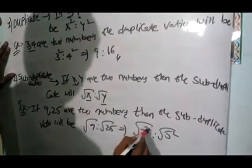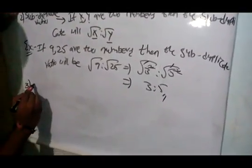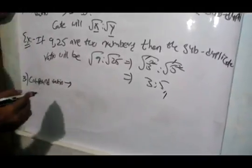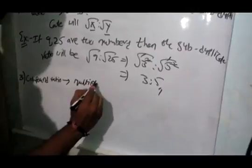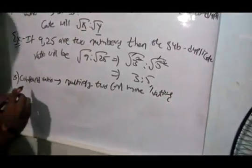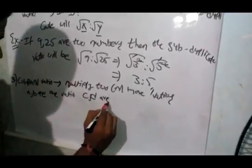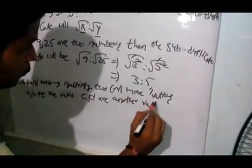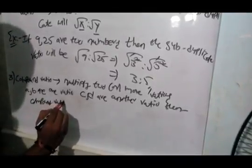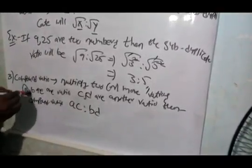Next one is compound ratio. In this compound ratio we have to multiply two or more ratios. That means if a, b are one ratio and c, d are another ratio, then compound ratio is simply multiply - a times c is to b times d. Here it can be multiplied, and then b and d are multiplied.